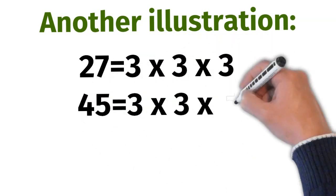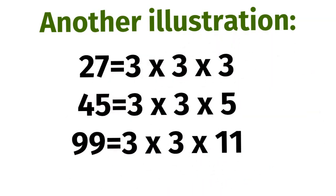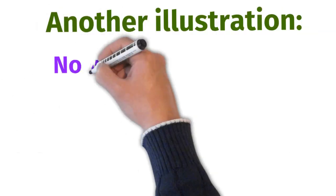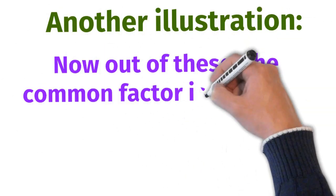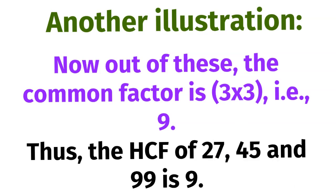Take another example. We can write 27 = 3×3×3. 45 = 3×3×5. 99 = 3×3×11. Out of these, the common factor is 3×3, that is 9. Thus, the HCF of 27, 45 and 99 is 9.